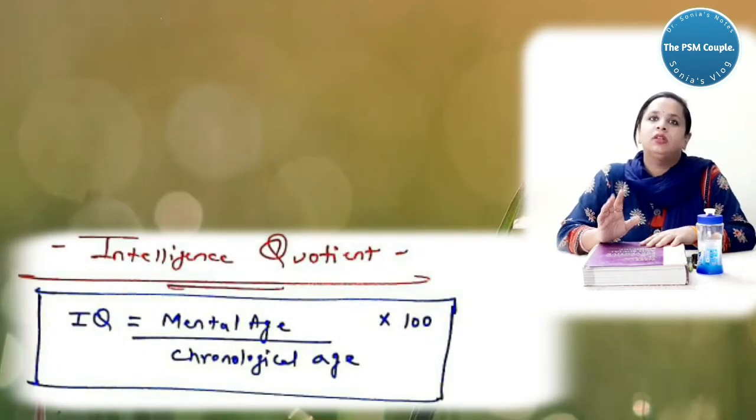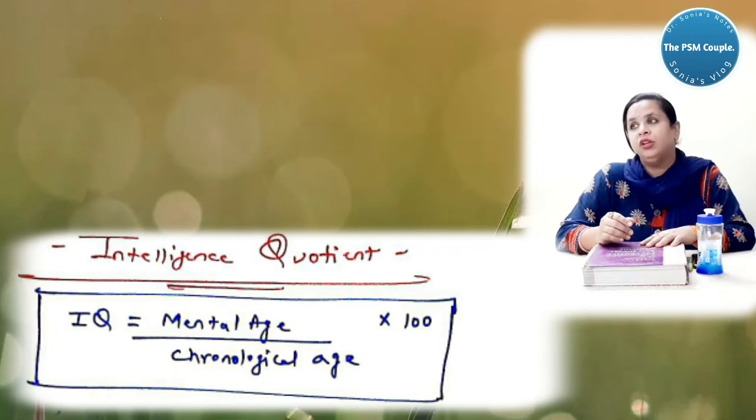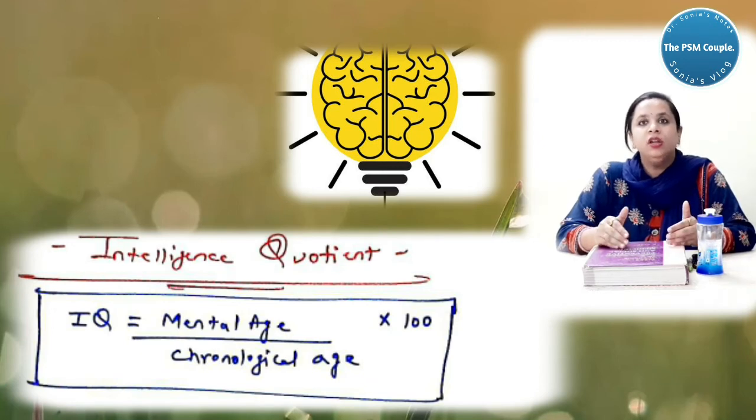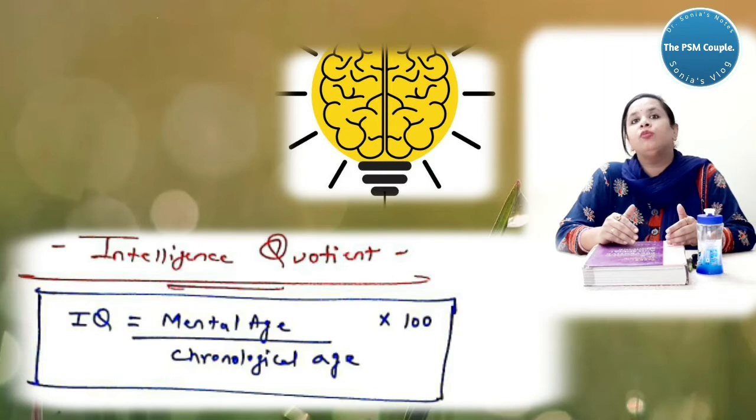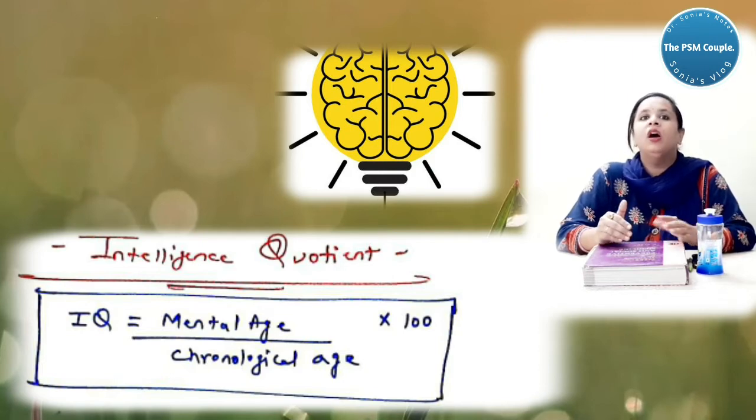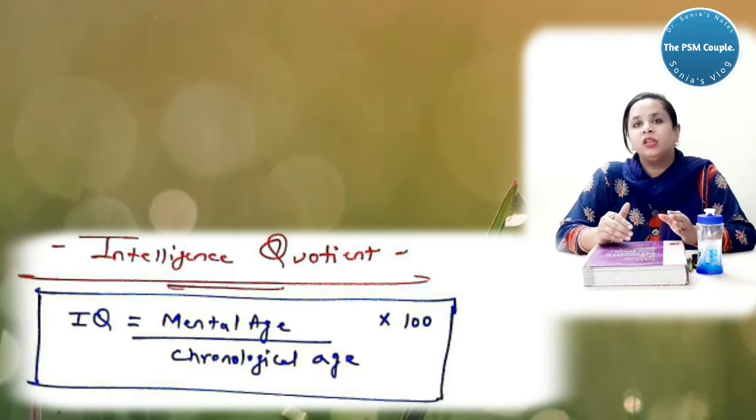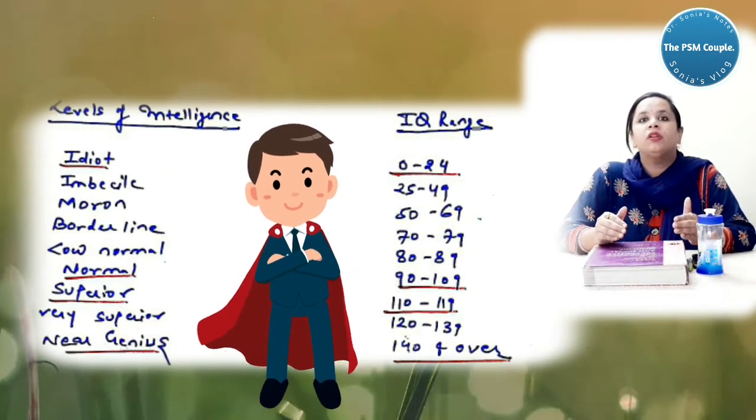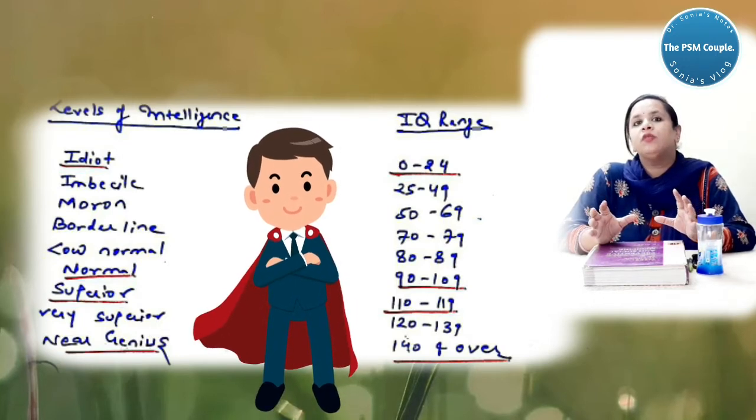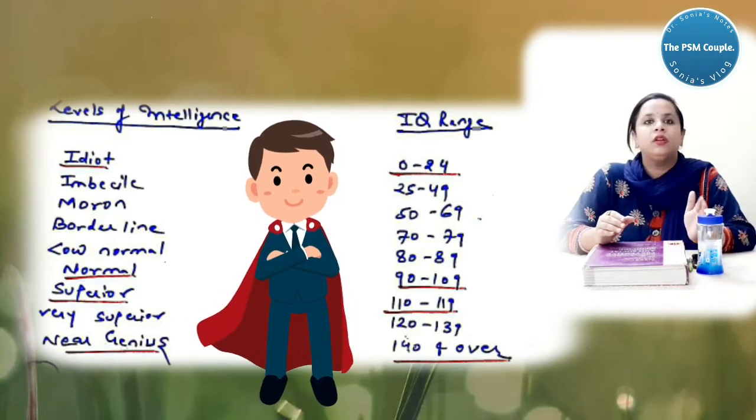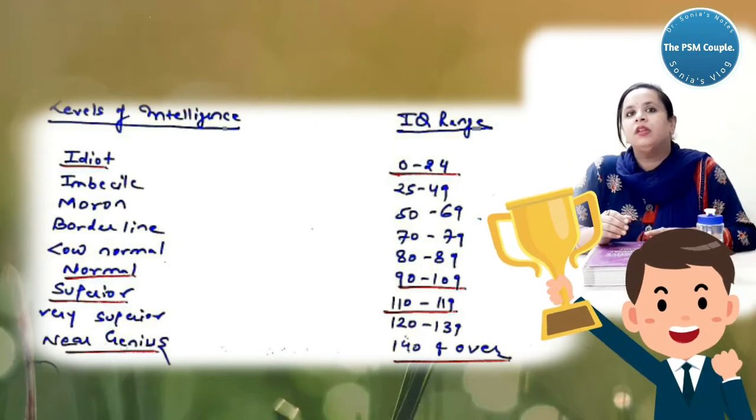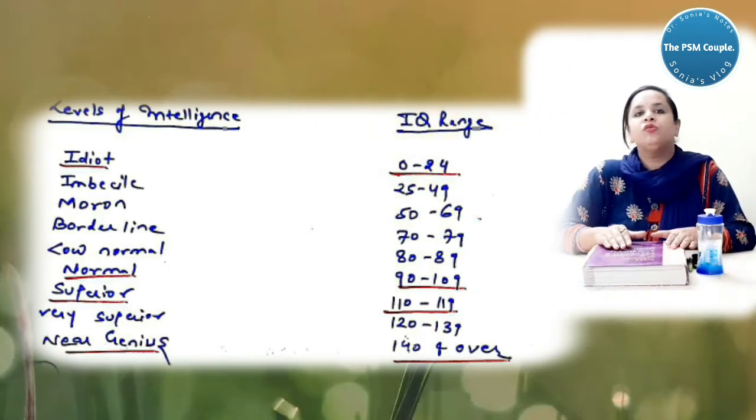Then coming to the next heading, that is intelligent quotient or you can say IQ. First of all the formula is asked in the various pre-PG questions and your exams. IQ is equal to mental age upon the chronological age into 100. Now these are the various levels of intelligence and their IQ range. Few I have underlined which were important. Like idiot, the IQ range is 0 to 25. Normal range for the IQ is 90 to 109. Superior is 110 to 139. And near genius, if your IQ is 140 and above, then you are near genius.